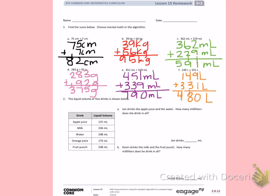Number 2. The liquid volume in 5 drinks is shown below. Apple juice is 125 milliliters, milk is 236 milliliters, water is 248 milliliters, orange juice is 174 milliliters, and fruit punch is 208 milliliters.